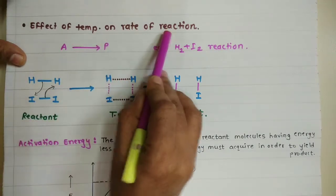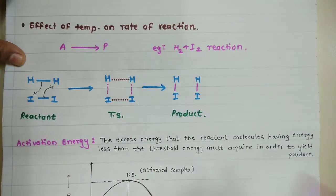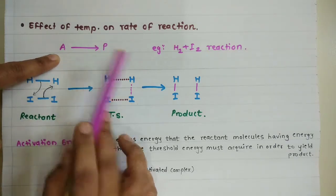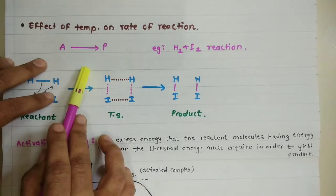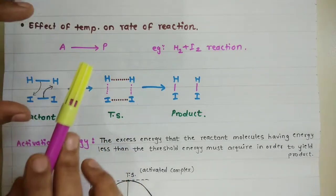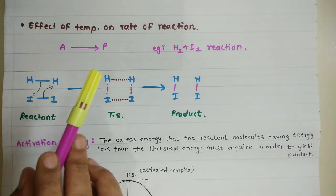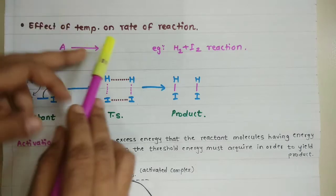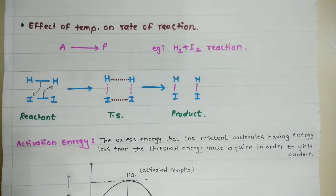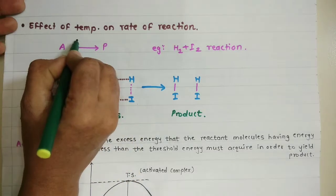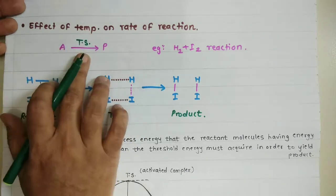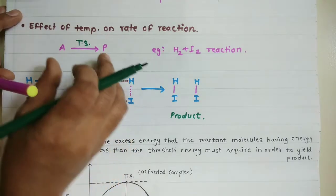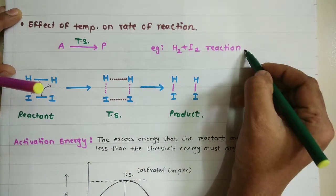Let us start with the effect of temperature on the rate of reaction. First, to understand this concept, we should consider a general reaction: reactant A gives product P. When any chemical reaction takes place, there will be formation of an activated complex, or we can say a transition state. After crossing that energy barrier, the reactants come to the product state — so the conversion from reactant to product goes through the transition state.